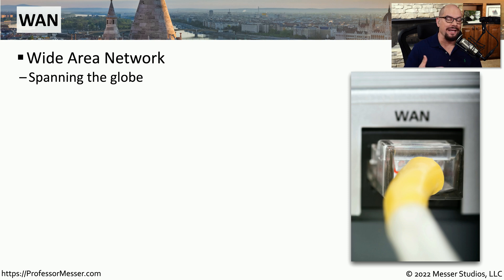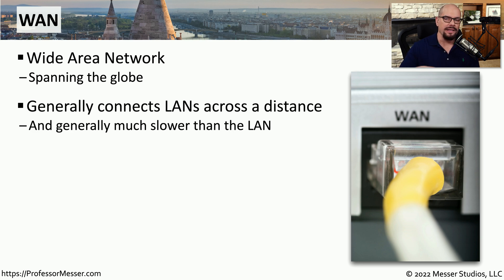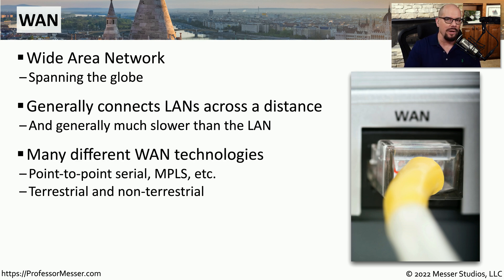If you're communicating to a location that is in another city, another country, or somewhere else around the world, then you're communicating over a WAN or a wide area network. Because of the distances involved in getting that signal from one location to another over such a long distance, these speeds are usually slower than what you might find on a local area network. There are many different ways to accomplish this — it could be over a point-to-point serial connection, it could be through MPLS, or many other types of wide area network technologies. Sometimes these wide area networks are connected with fiber in the ground, or you may be communicating through a non-terrestrial or satellite link.